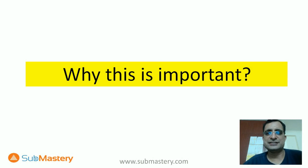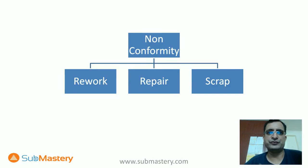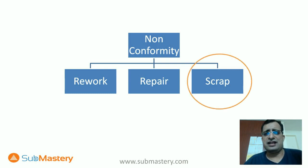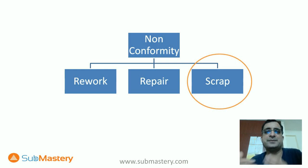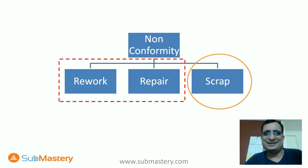First of all, we should know why it is important to understand these terms. If a product is non-conforming, it could have three decisions: it could go for rework, it could go for repair, or it could be scrapped. Scrap is something which goes to sale or to a third party and can't be used by the organization again in production. Scrap is clear to most people, but there is confusion between rework and repair.